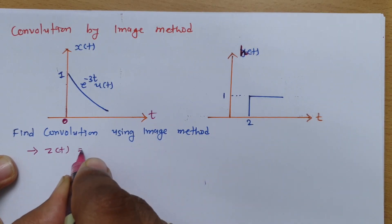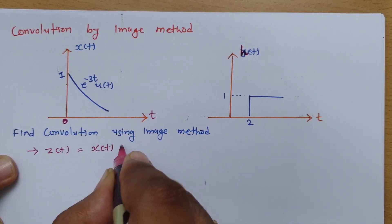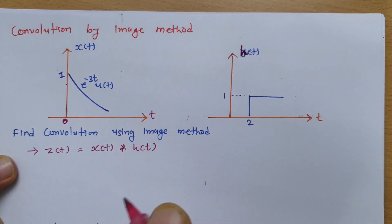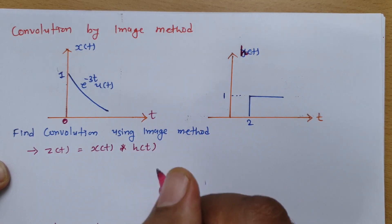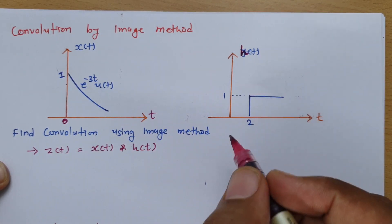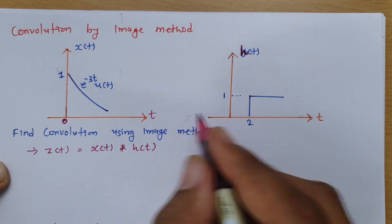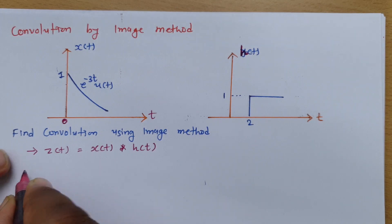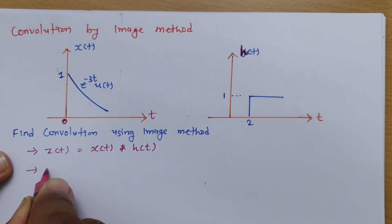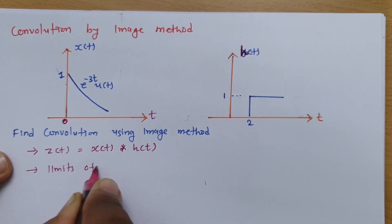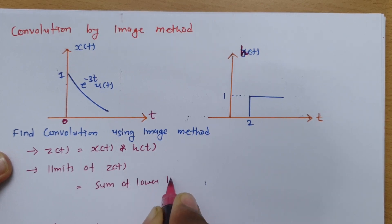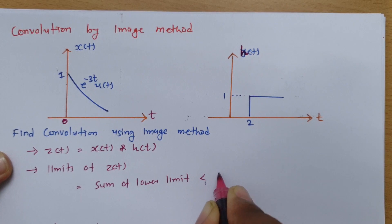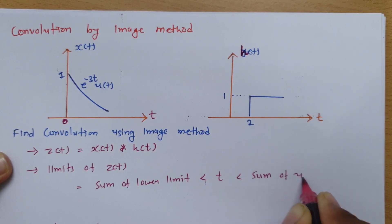Now if we do this with integration we have a formula, but we don't need to calculate it by formula since it is given in terms of waveform. I'll explain how we can find it using the waveform step by step. First, if you observe the limits of z(t), the limits of z(t) will be: sum of lower limit less than t less than sum of upper limit.